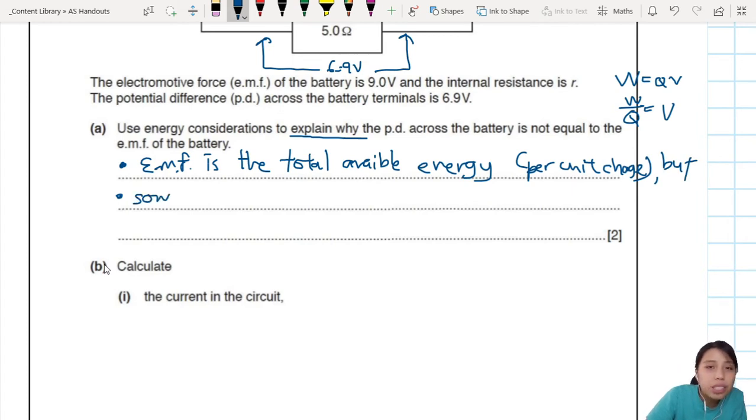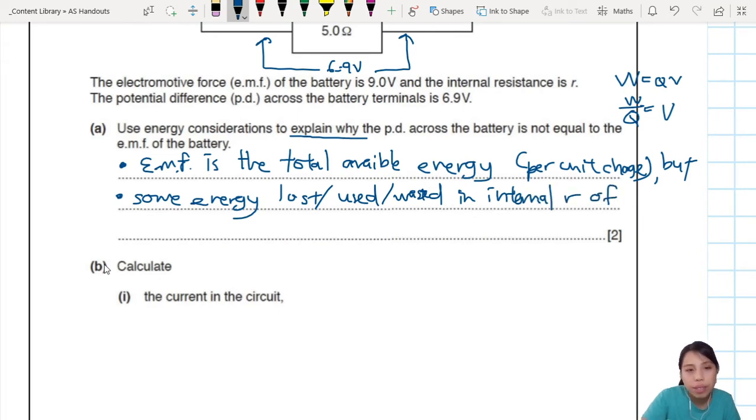But there is some energy lost to what? So there's some energy lost or used or wasted because of that culprit, internal resistance. Some energy lost, used, wasted in internal R of battery. And lost as heat. The battery will get hot. And then if you want to add a concluding statement, therefore your potential difference across battery will be less than your EMF because some of it are lost. You supply so much, wasted a bit, then the leftover is what you have to use for the circuit. Two marks here, that's probably a B1 and a B1.